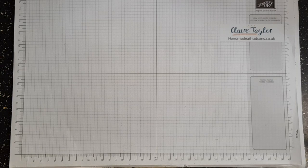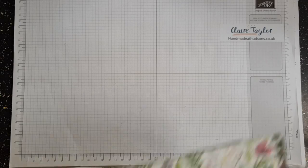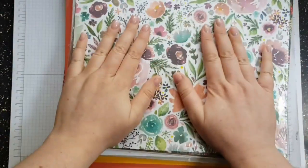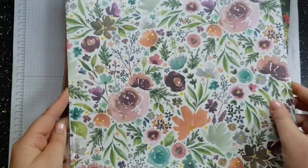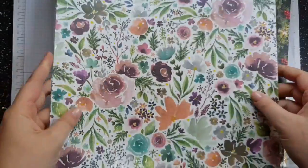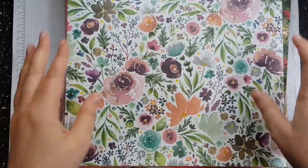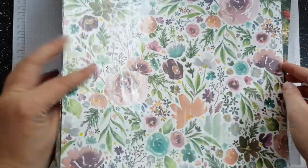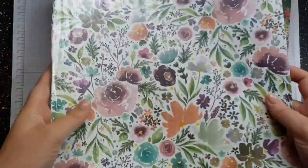So let's go through 12 by 12s. This is the frosty floral specialty designer series paper and it's got a shimmer to it. I will go through this in a separate video but I'm so excited, I really want to see it.